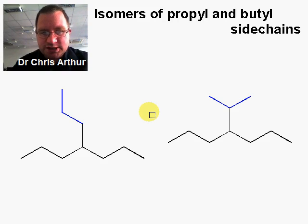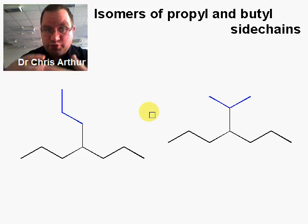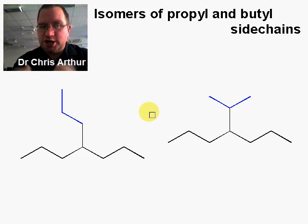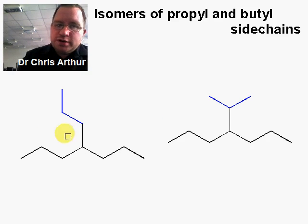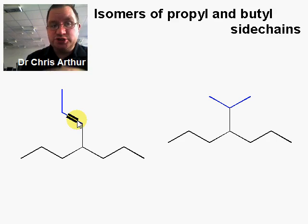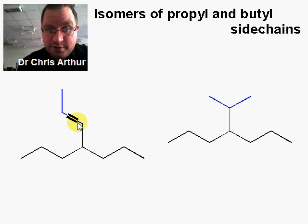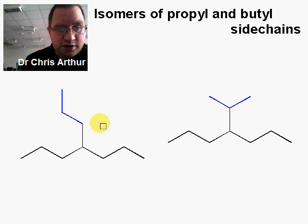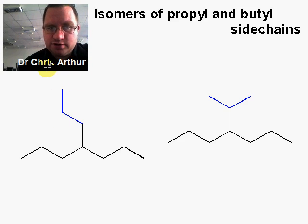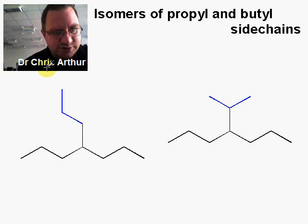We've met the concept that hydrocarbon chains or organic molecules can have branching — smaller, shorter groups attached to a longer chain. In some cases, those chains themselves can be branched. Most commonly, we're going to encounter cases where we have propyl groups or butyl groups that have branching. Because they're the most common and the smallest, we have special names for those.